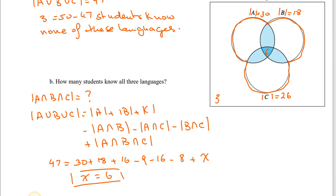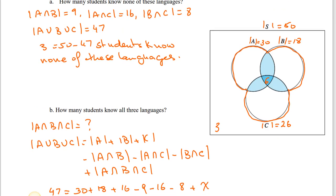Now we can fill in the Venn diagram. Since |A∩B| = 9 and the triple intersection is 6, the region in A∩B only is 3. Since |A∩C| = 16, the region in A∩C only is 10. Since |B∩C| = 8, the region in B∩C only is 2. So A has 30 − 3 − 10 − 6 = 11 exclusively, B has 18 − 3 − 2 − 6 = 7 exclusively, and C has 26 − 6 − 10 − 2 = 8 exclusively.